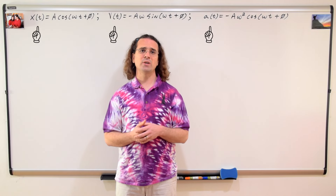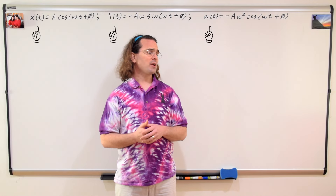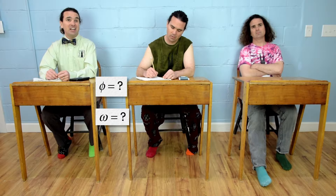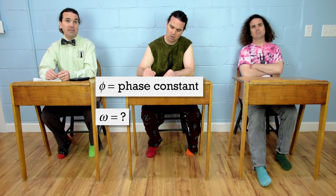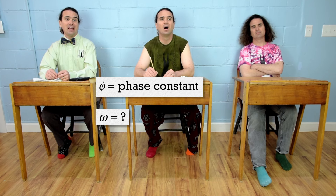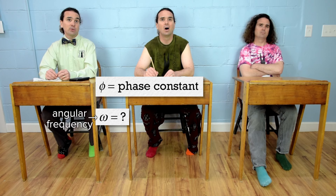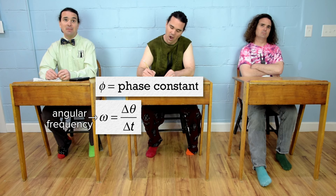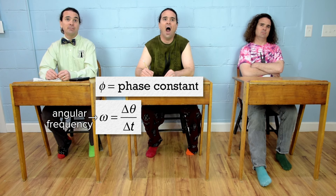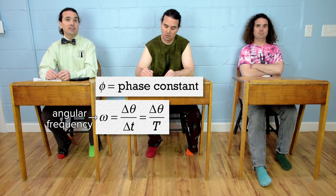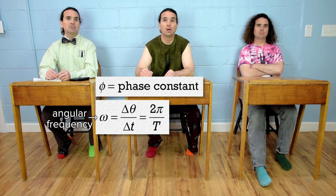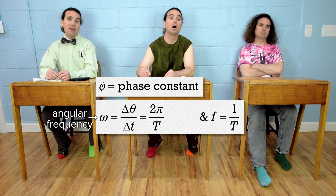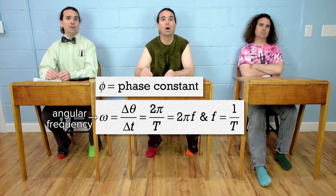These are the three equations we derived previously. Billy, what are omega and phi? Phi is the phase constant, which phase shifts the curve along the horizontal axis, and omega is the angular frequency, which we derived using angular velocity equals angular displacement over change in time. If the object experiences one full revolution or cycle, the change in time equals the period and the change in angular position equals two pi radians. We know frequency equals the inverse of period, therefore angular frequency, omega, equals two pi times frequency.